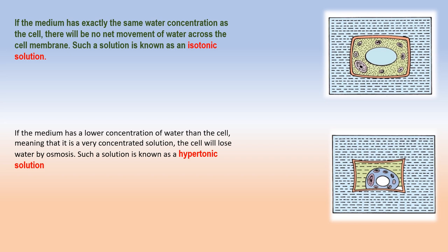If the medium surrounding the cell is of exactly the same water concentration as the cell, there will be no net movement of water across the plasma membrane. Such a solution is called isotonic solution — for example, Ringer's solution is an isotonic solution for animal cells. In this case, water crosses the plasma membrane in both directions, but the amount going in is the same as the amount going out, so there is no overall movement of water and the cell maintains the same size.